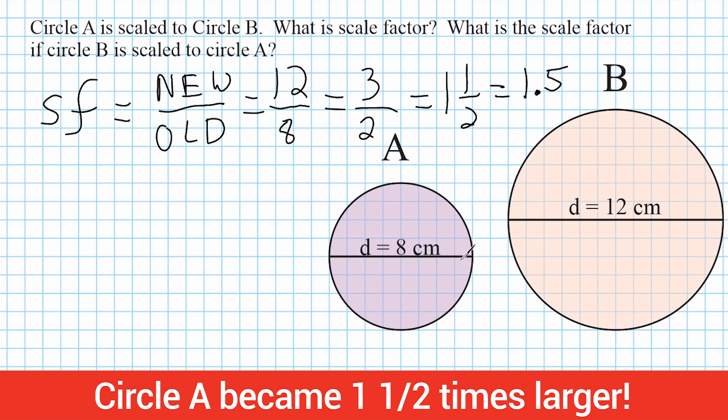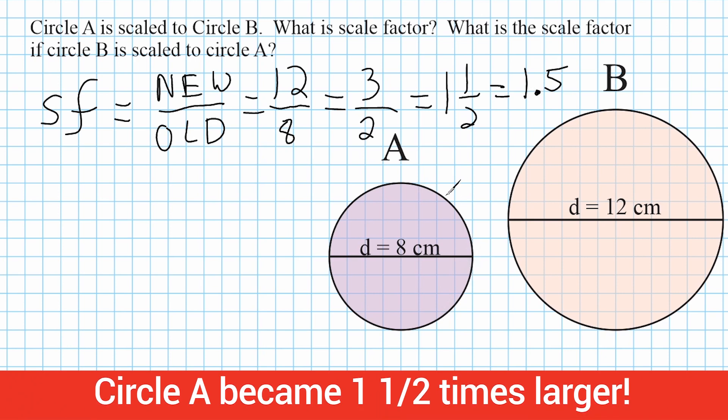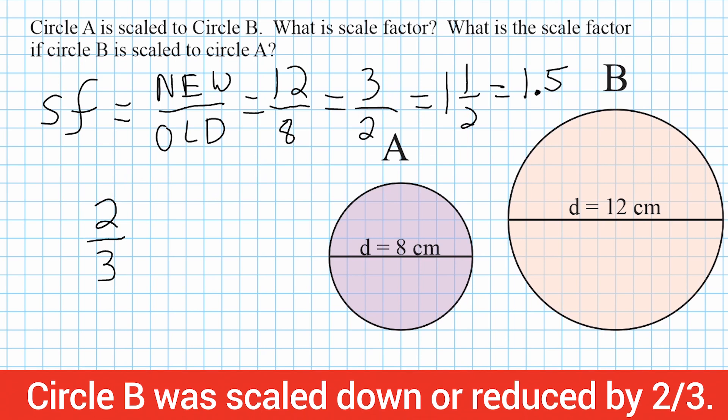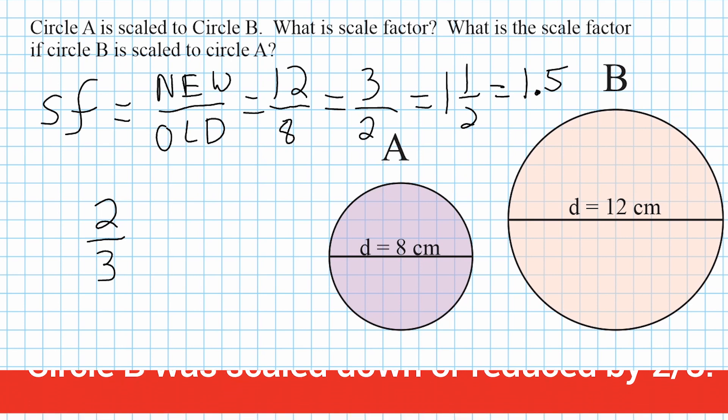Now if we want to find the scale factor if B is scaled to A, we could just take our original improper fraction, which is 3 over 2, and write that as 2 over 3, which is the reciprocal. So we would say that we scaled circle B by two-thirds to come up with circle A. Alright, let's go ahead and do another example.